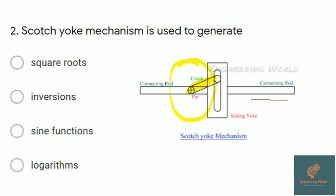The connecting rod moves left and right in simple harmonic motion. It generates harmonic motion, and hence the answer is it's used to generate the sine function.